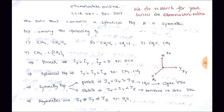Now let's look at the question given in CSIR net December 2017. The question is: the pair that contains a spherical top and a symmetric top among the following is — option 1: CH₄ and CH₂Cl₂; option 2: CH₂Cl₂ and CH₃Cl; option 3: CH₃Cl and CH₄; option 4: CH₄ and C(CH₃)₄.